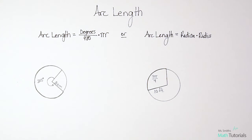Arc length equals degrees divided by 180 times pi times r. And r stands for the radius.